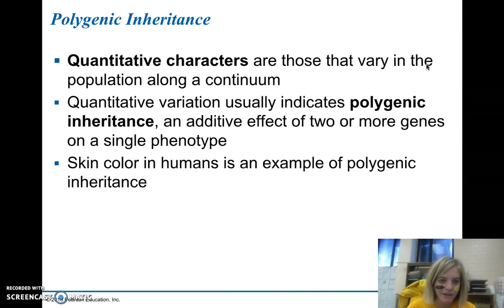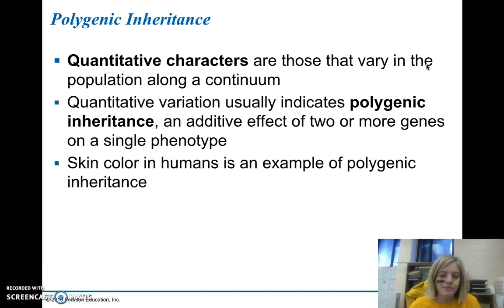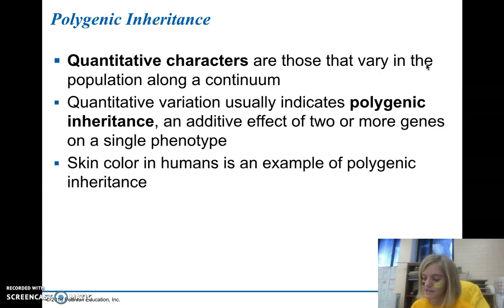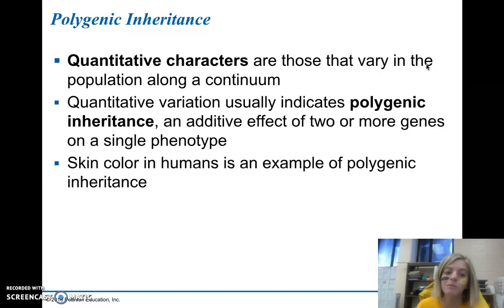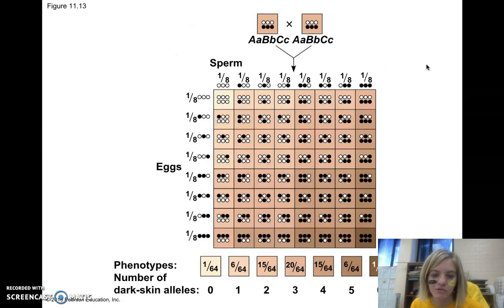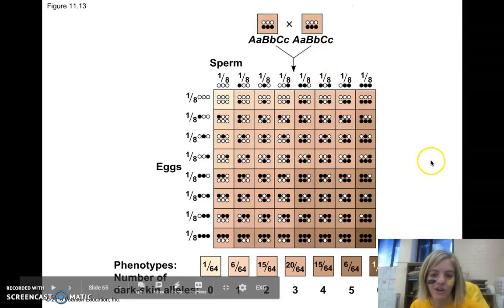Another difference from Mendel's simple inheritance is polygenic inheritance, involving quantitative characters that vary along a continuum. Skin color is a good example — there's a wide variety of skin colors along a continuum resulting from multiple genes whose interactions produce our phenotype. This is the reverse of pleiotropy: in polygenic inheritance, two or more genes affect one single phenotype. Skin color is affected by three different genes, and depending on how they interact, we get all these different phenotypes.